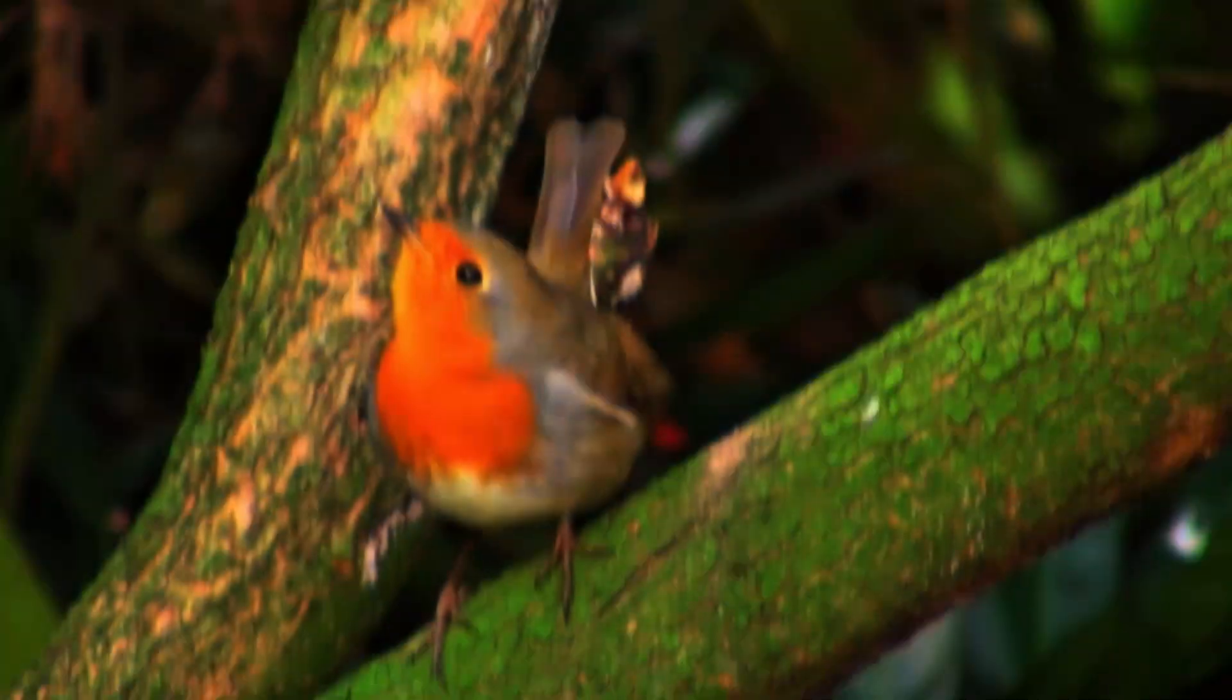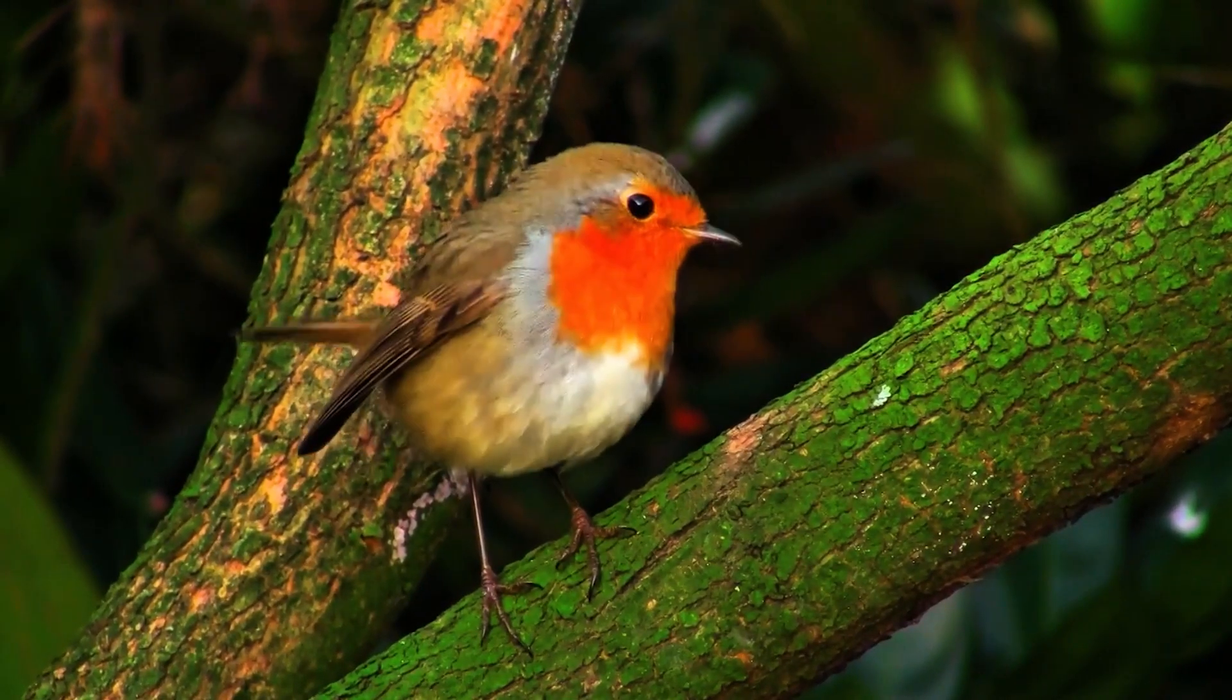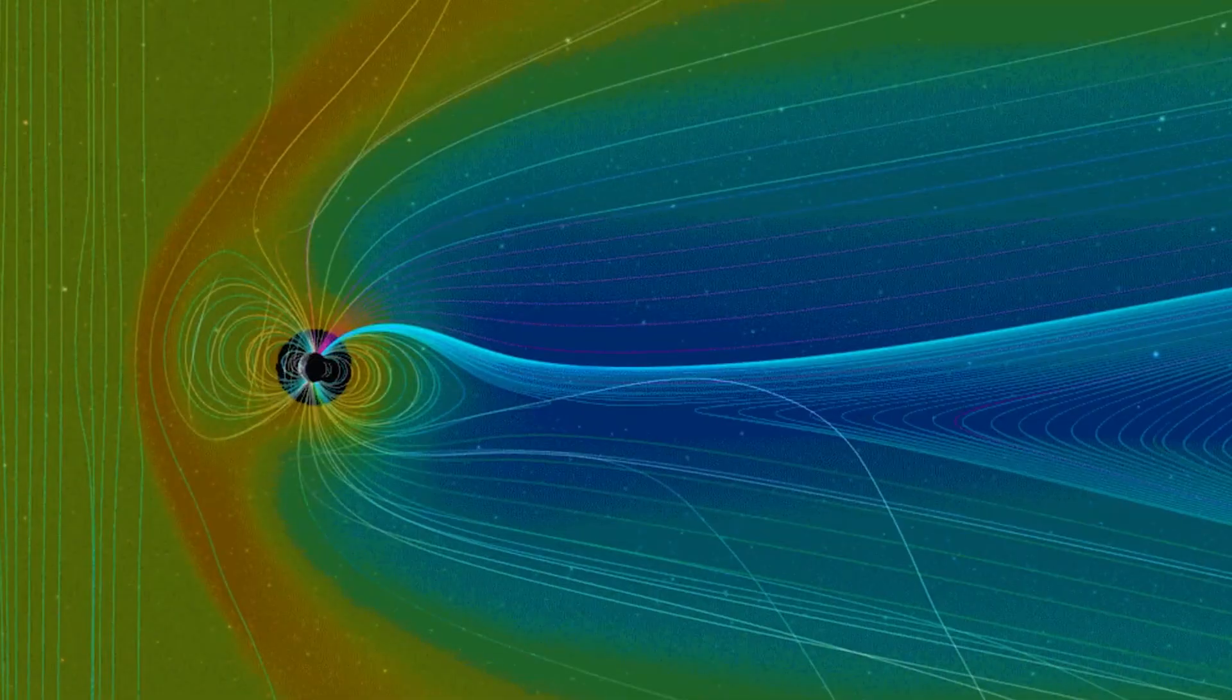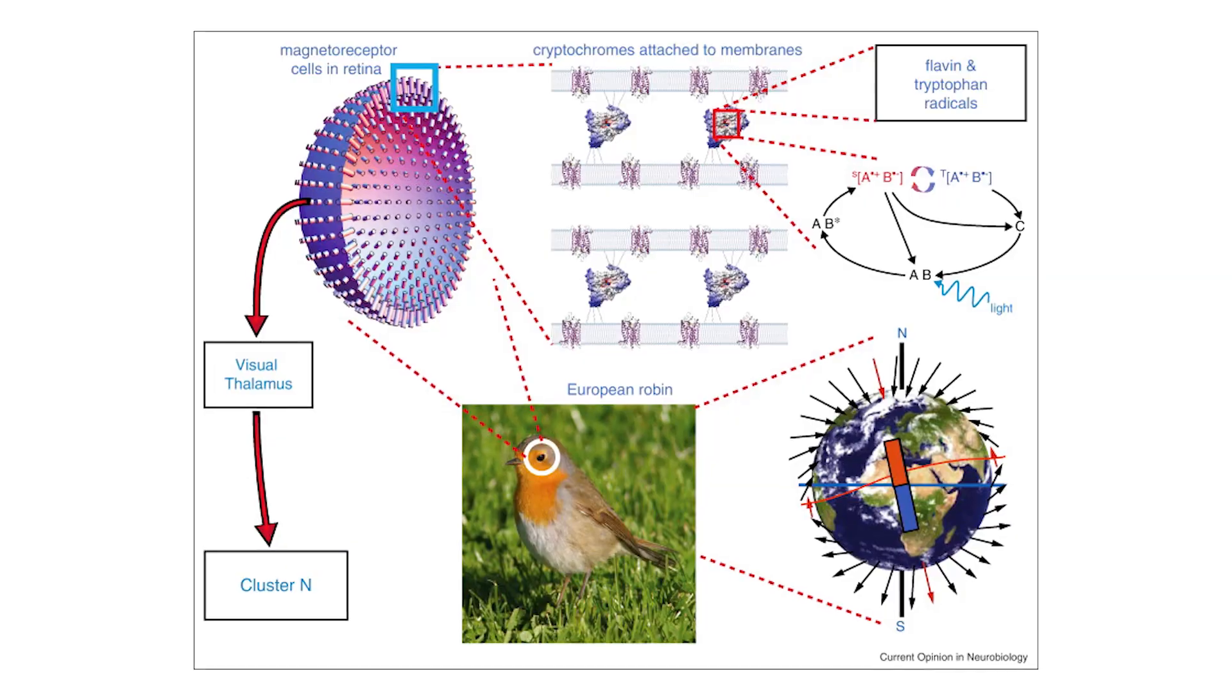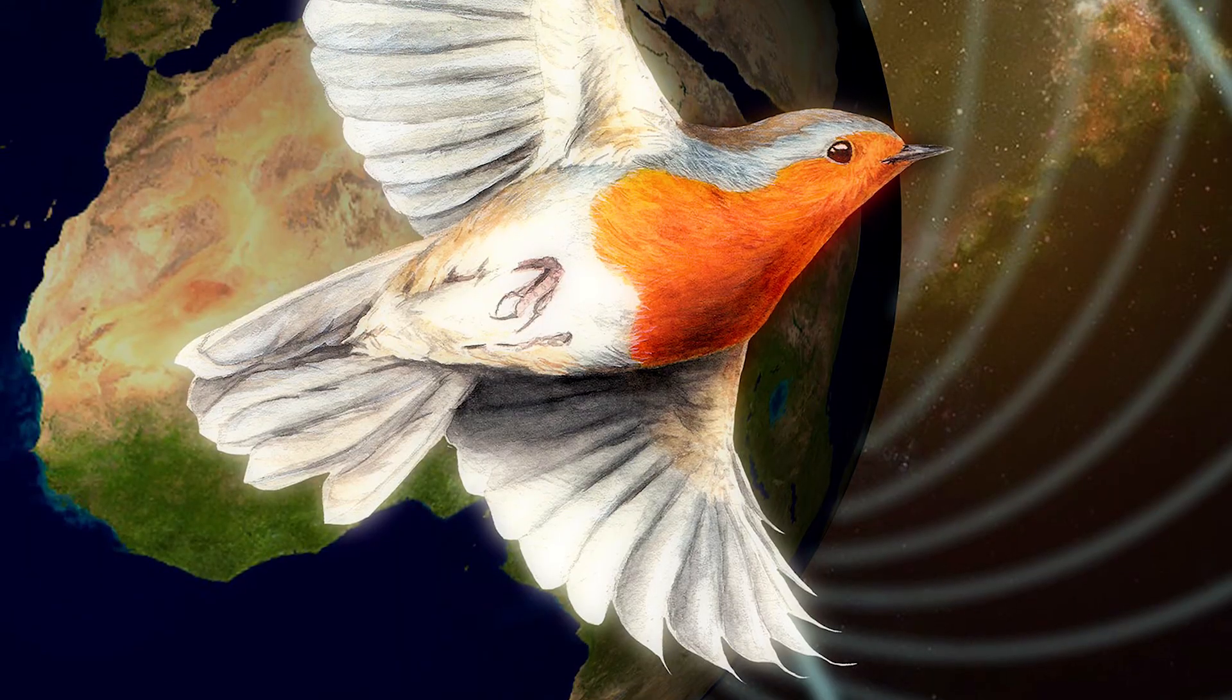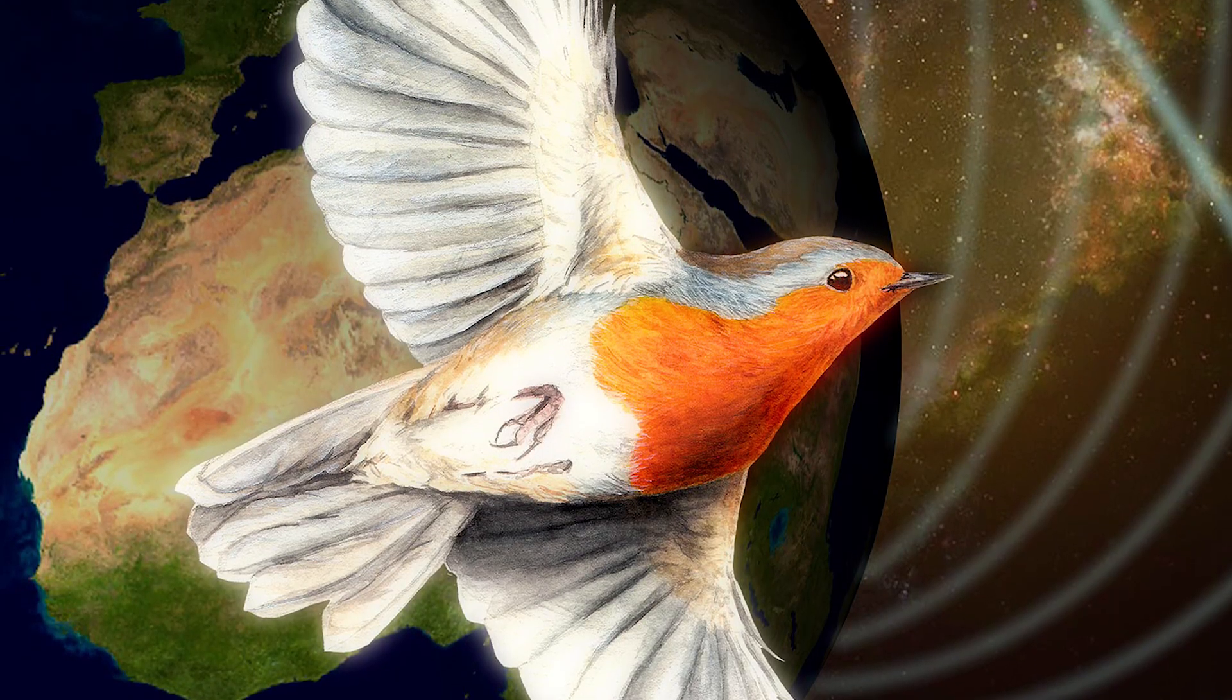In navigation, the radical pair mechanism used by migratory birds is inspiring development of magnetic sensors that don't rely on GPS. Such quantum compasses could provide navigation in environments where GPS fails, such as underwater, in urban canyons, or during solar storms.